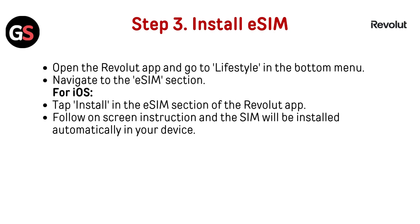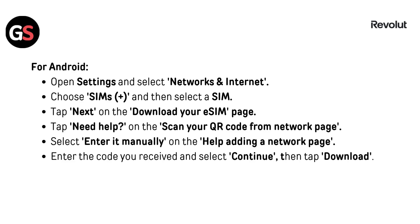Step 3: Install eSIM. Open the Revolt app and go to Lifestyle in the bottom menu, then navigate to the eSIM section. For iOS, tap 'Install' in the eSIM section of the Revolt app, follow the on-screen instructions, and the eSIM will be installed automatically on your device.